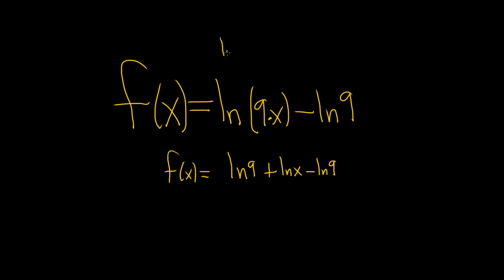The formula here, by the way, is the natural log of a times b becomes the natural log of a plus the natural log of b. So we're applying it to this example here. So a is 9 and your b is your x.